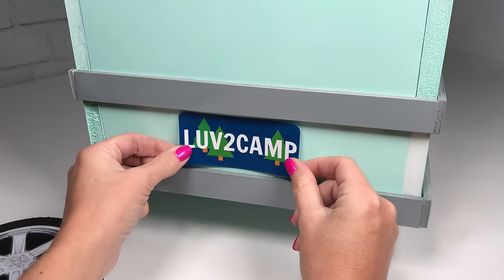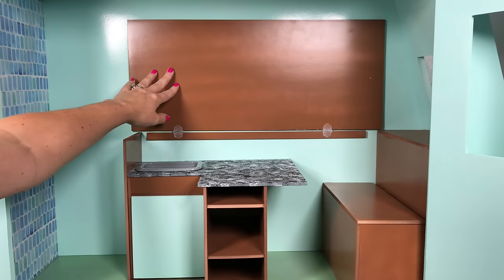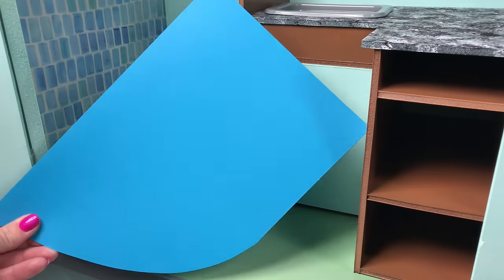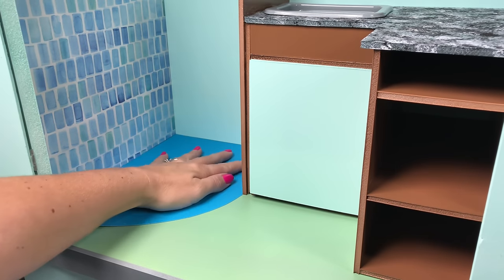Decorate the camper with the printables and any nature stickers you might have. For the shower floor, cut a piece of scrap paper to size and glue it to the floor.